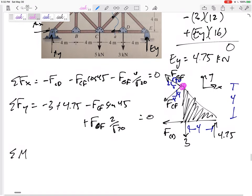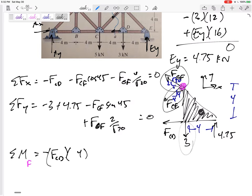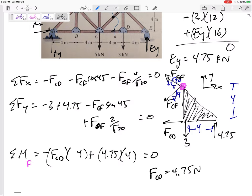Sum the moments about point F because FGF and FCF go straight through it. So summing the moments about point F, FCD is acting four away creating a clockwise moment. Remember FCF goes straight through it, FGF goes straight through it, three actually goes straight through it. And then the 4.75 is four away creating a positive moment. Set that equal to zero. And I would get FCD is equal to 4.75. It came out positive, which means I guessed correctly and I guessed tension. So there we go right there.